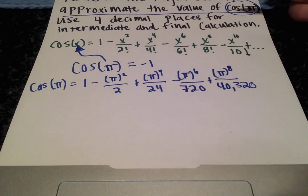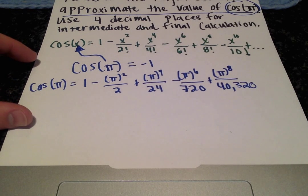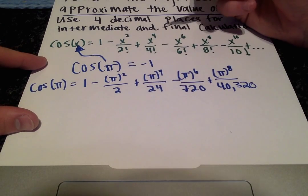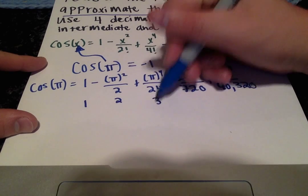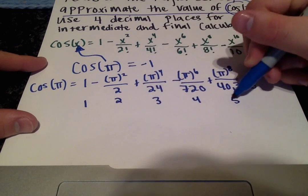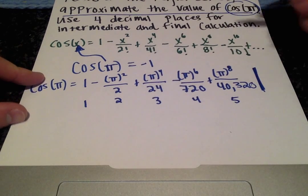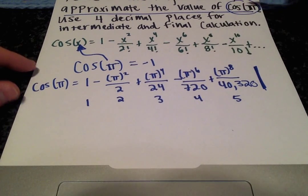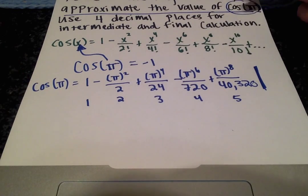And, let's not forget that we want the first five non-zero terms. So, we have 1, 2, 3, 4, and 5 terms. So, we can stop right there. We don't have to add any more terms, because the problem said these are the first five non-zero terms, and we have those here.